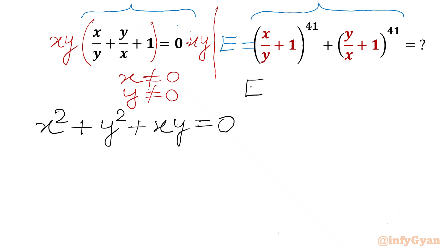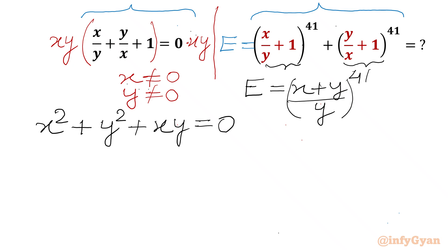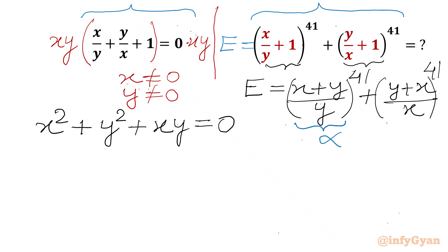Now I will simplify our required expression E. Taking LCM, I can write (x+y)/y whole to the power 41, plus (y+x)/x whole to the power 41. I will consider the first bracket (x+y)/y as alpha and (y+x)/x as beta.